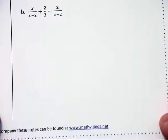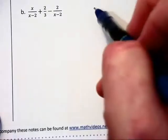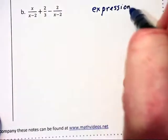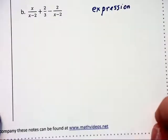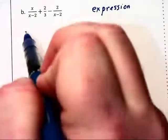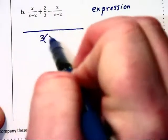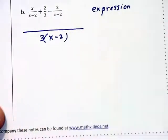Using the same exact values, we have another problem but this is an expression instead. Now what's important here is that we do not multiply through by the least common denominator. Instead, we want to keep that common denominator, keep the 3(x - 2) in the denominator.